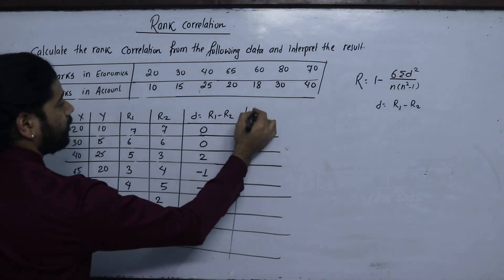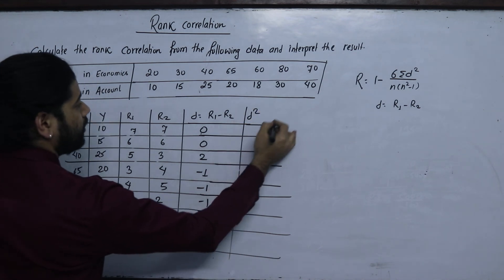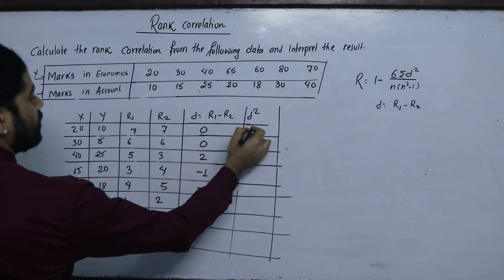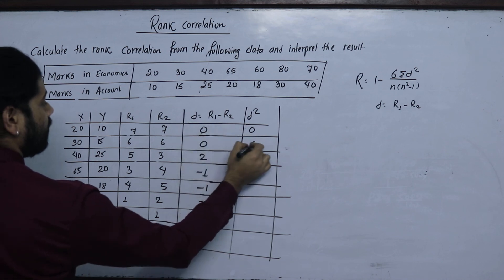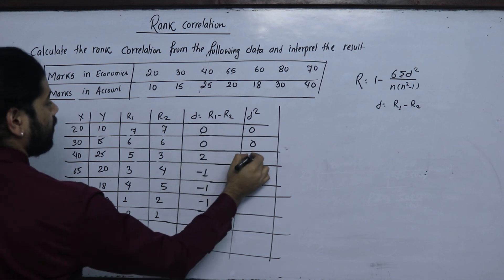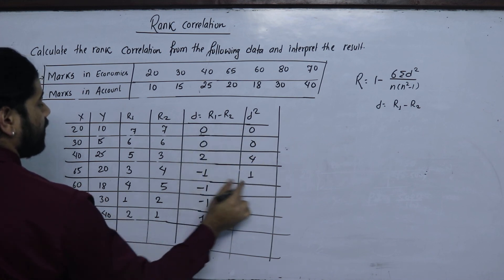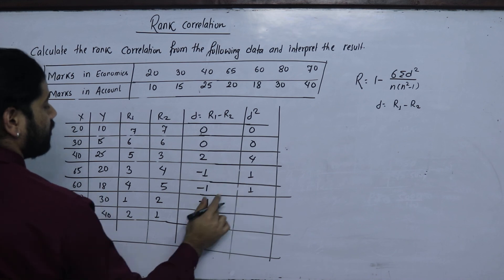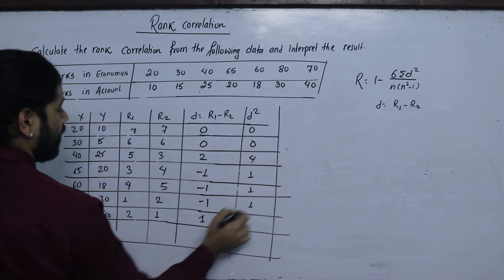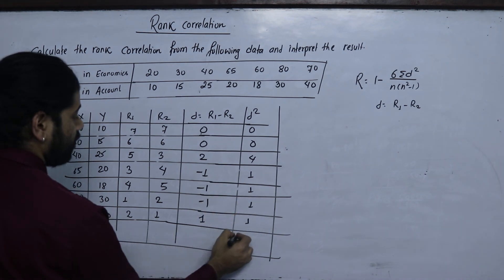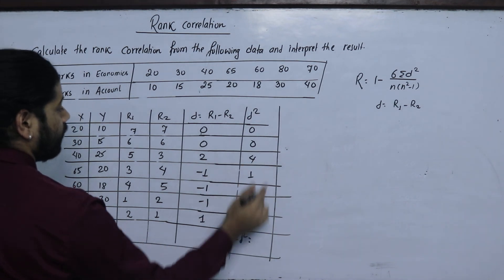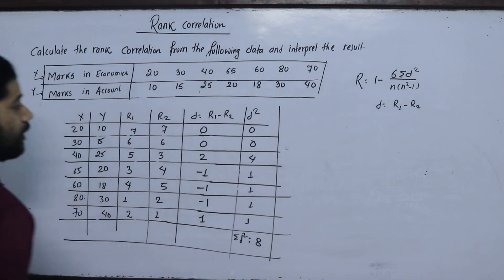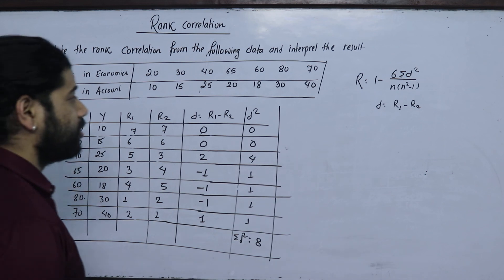Now compute D-squared: 0×0=0, 0×0=0, 2²=4, (−1)²=1, (−1)²=1, 1²=1. The summation of d-squared: 1+2+3+4+... totals to 8. So summation d-squared equals 8.